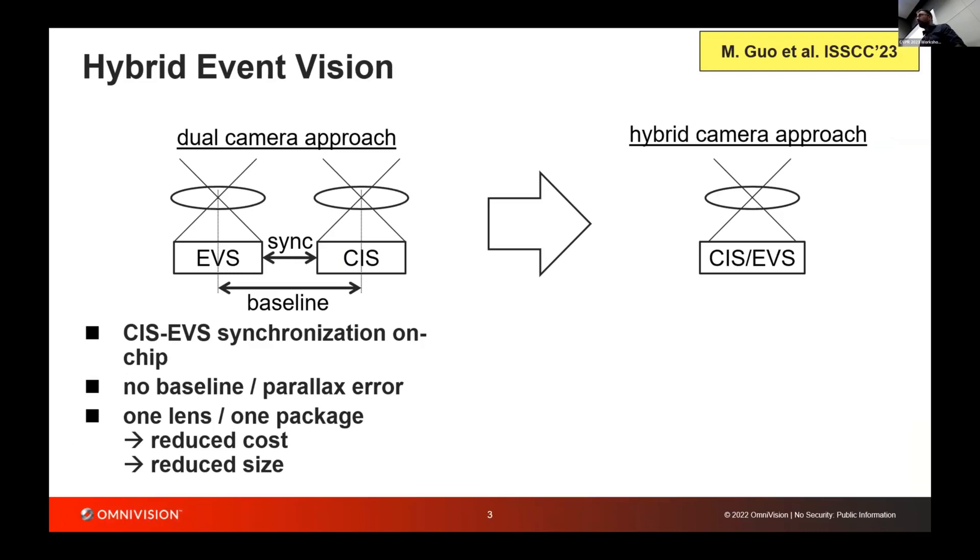What we are looking into is a hybrid camera approach. We presented this at ISSCC earlier this year. We have an extended paper upcoming in the JSSC journal. Compared to a dual-camera approach, it has the advantage that we solve synchronization on-chip and we don't have baseline or parallax error. Also, we need only one lens and one package, so it reduces cost and size.